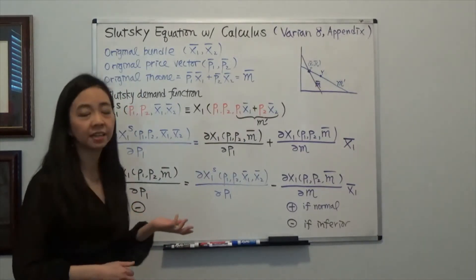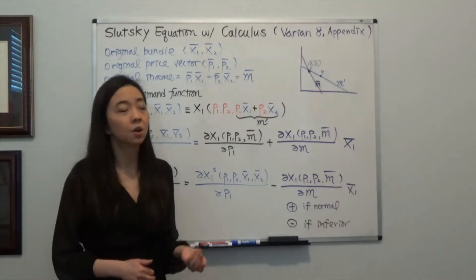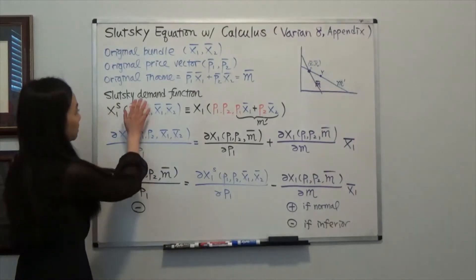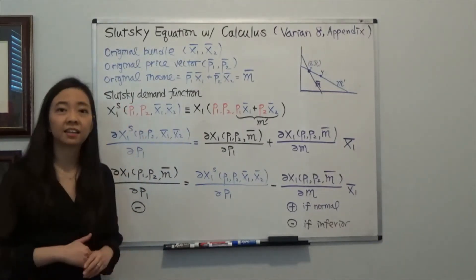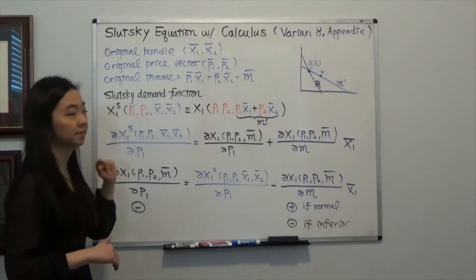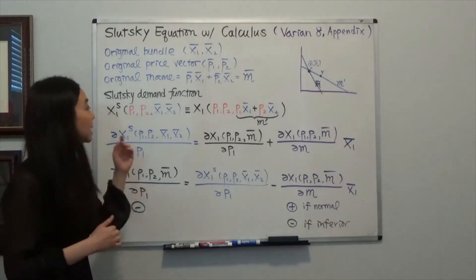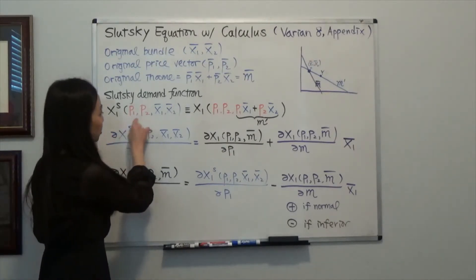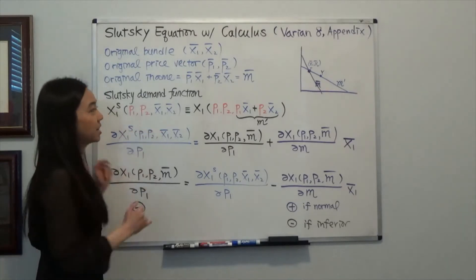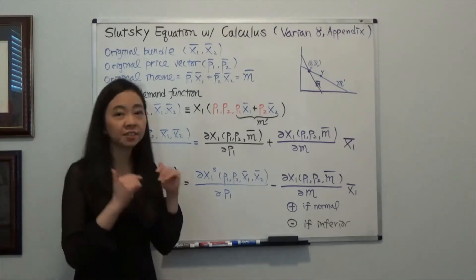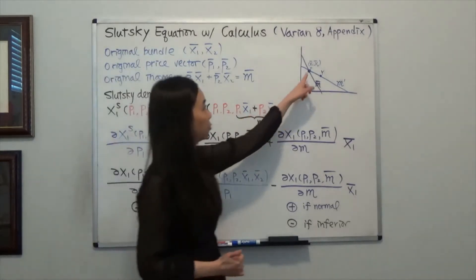So now there is a change in price. We can define a Slutsky demand function that gives me the amount of good one that I'm going to consume given the price vector of the new price and a budget that is just enough for me to buy the original bundle.